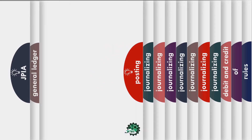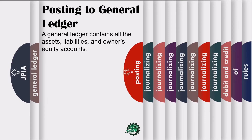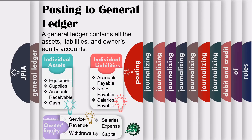The third step in the accounting cycle is posting to the general ledger. A general ledger contains all the assets, liabilities, and owner's equity accounts. It is the reference book of the accounting system and is used to classify and summarize transactions and to prepare data for basic financial statements. Here are some account titles under assets: equipment, supplies, accounts receivable, and cash.